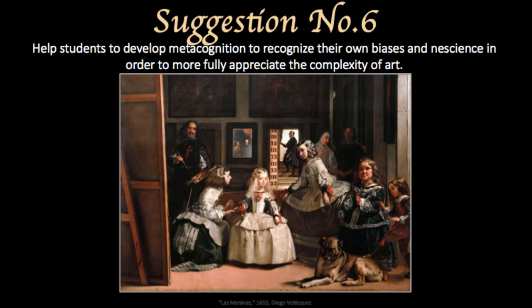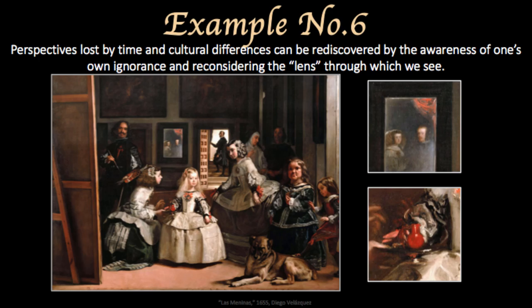Suggestion number six: help students to develop metacognition and recognize their own biases and nescience in order to more fully appreciate the complexity of art. Looking at something from the perspective of someone else can be enlightening. For example, when looking at art from another time, context can be lost to modern viewers. Perspectives lost by time and cultural differences can be rediscovered by the awareness of one's own ignorance and reconsidering the lens through which we see. Velázquez's Las Meninas, for example, may look to the untrained eye like a portrait of entirely European influence. However, looking closer, small details which would have been highly significant and obvious to viewers of the time appear. Three key elements — cochineal red fabric, red clay pottery, and a small silver tray — all show the connection of the Spanish royal family to their effort to colonize South America.